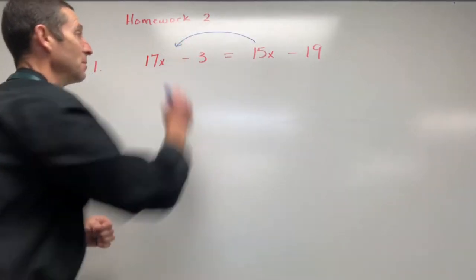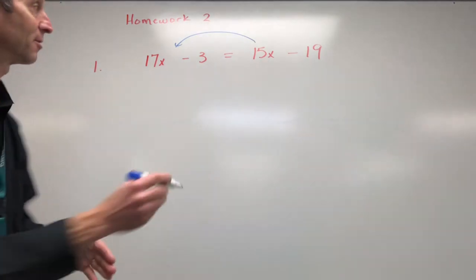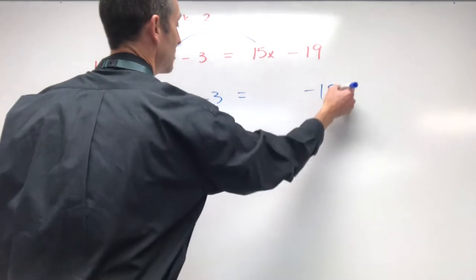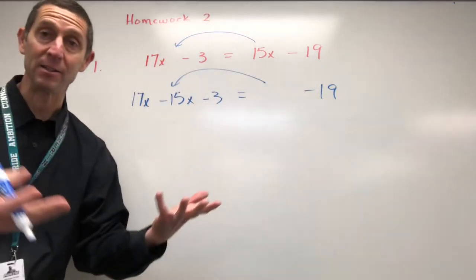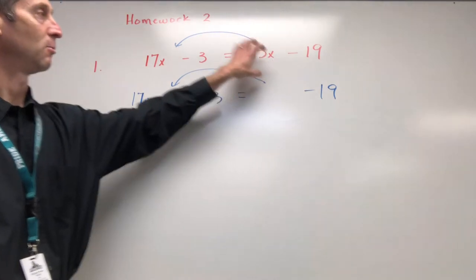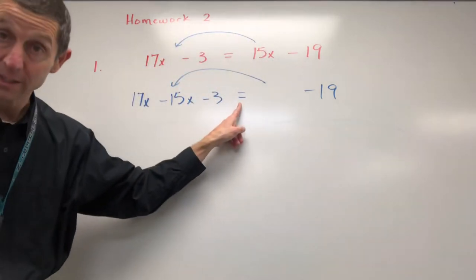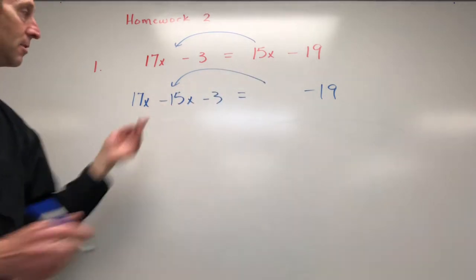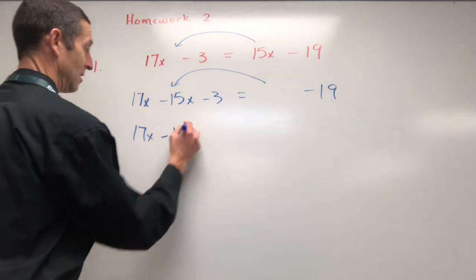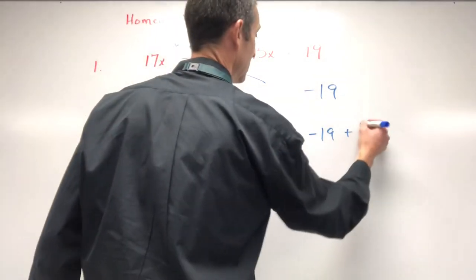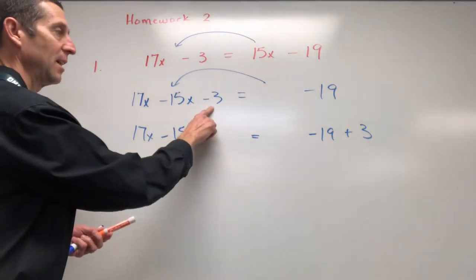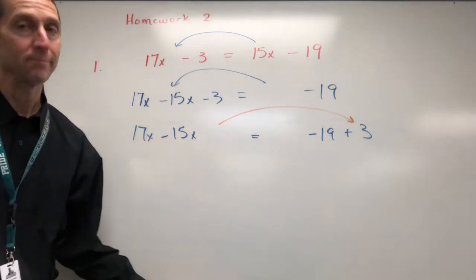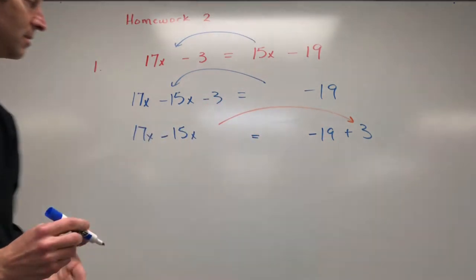So I'm going to grab this 15x and move him over so I get my x's together. So 17x minus 15x. You guys have got a feel for how I like to do these problems. If it's positive on one side, when I move him, if he crosses the equal sign, that changes his value. So that's the only rule to remember—positive on one side, negative on the other. Same thing on this 3. This 3 was negative. I move it over. If it crosses the equal sign, you change its value, so a negative 3 becomes positive 3.